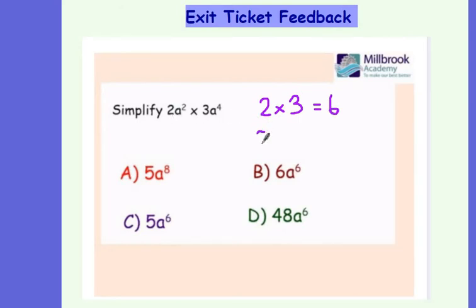Then looking at our letters, we've got a squared times a to the power 4. Again, using our multiplication of indices rule, that gives me a to the power 2 plus 4, which is a to the power 6.